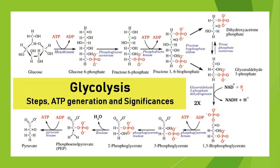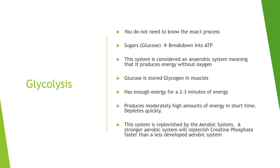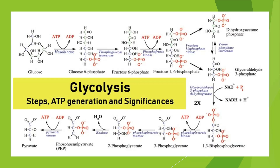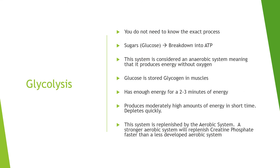Then you have glycolysis. It's a complex process, but essentially it breaks down glycogen or sugars — specifically glucose or glycogen within the muscles — into ATP. It's considered an anaerobic system, meaning it produces energy without oxygen. Glucose is stored as glycogen in the muscles. This system has enough energy for two to three minutes.